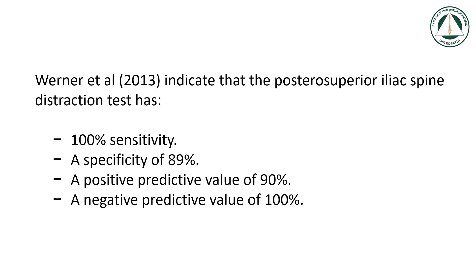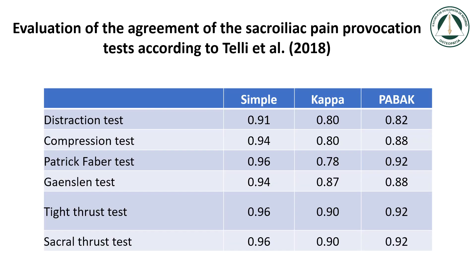Wernher et al. 2013 indicate that the posterior superior iliac spine distraction test has 100% sensitivity, a specificity of 89%, a positive predictive value of 90%, and a negative predictive value of 100%. According to Telly et al. 2018, most of the sacroiliac pain provocation tests have limited reliability and validity by themselves, whereas a multi-test group consisting of sacroiliac joint pain provocation tests is a reliable method, and these tests can be used in place of unnecessary invasive procedures.